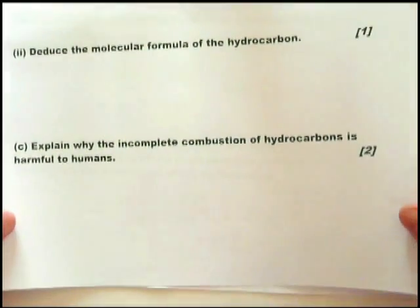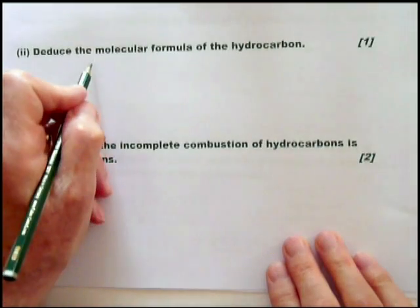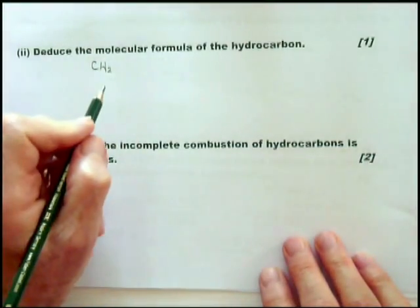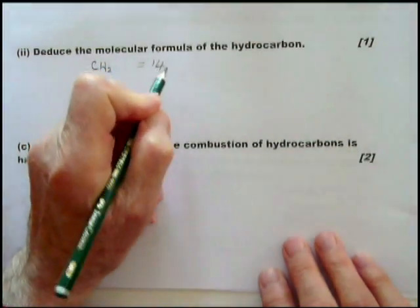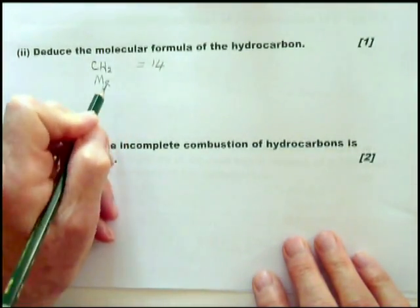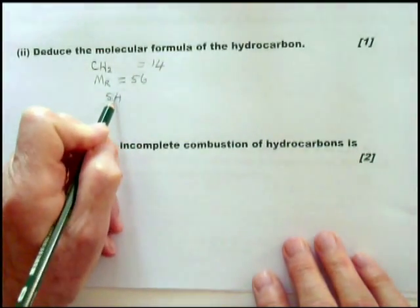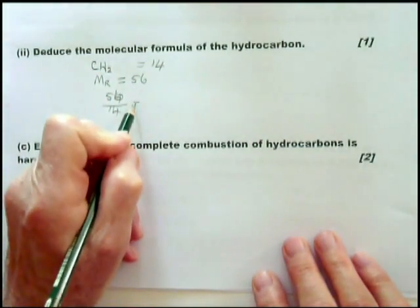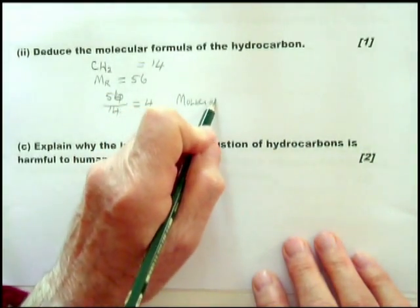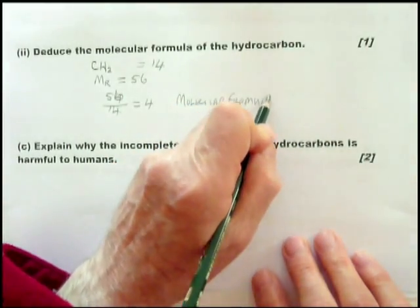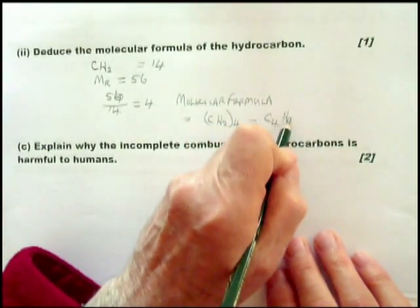We now have to deduce the molecular formula of the hydrocarbon. We know two things: the empirical formula is CH2, and the relative molecular mass of CH2 is 14. We know that the relative molecular mass of the final formula is 56. So we divide 56 by 14, and that comes to 4. Therefore, the molecular formula is (CH2) times 4, which equals C4H8.